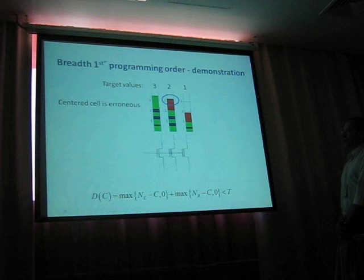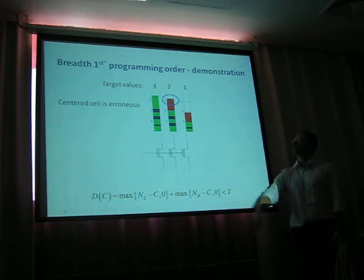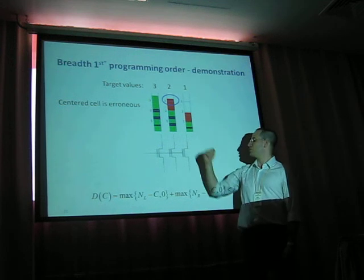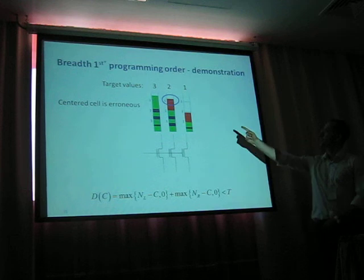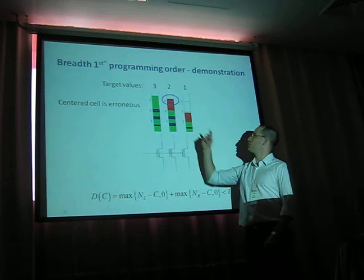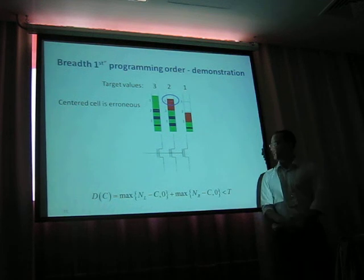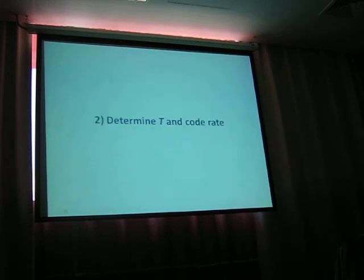We can see that the center cell is in error due to this intercell coupling. If we want to assign the severity function for this sequence of 3, 2, 1, it's the maximum of the left minus the center and 0. In this case, it's 1. It's 3 minus 2, which is 1, and the other one we take to 0.